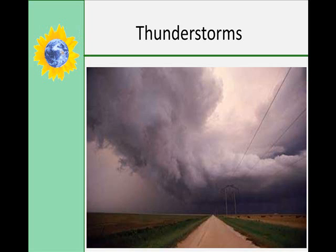Storms with lightning and thunder are considered thunderstorms, oddly enough. They also involve heavy precipitation, sometimes hail and gusty surface winds. Some favorable conditions leading to thunderstorms include unstable atmospheric conditions, strong convection cells — this is called a convective storm — and also the presence of a buoyant force, which is the force on a less dense object immersed in a denser object, so basically it's bouncing around inside the clouds.